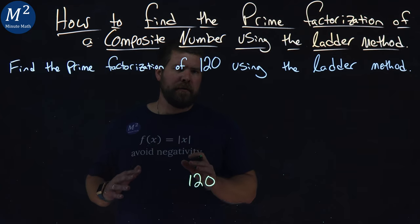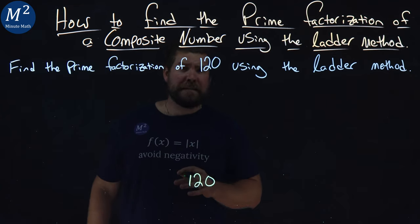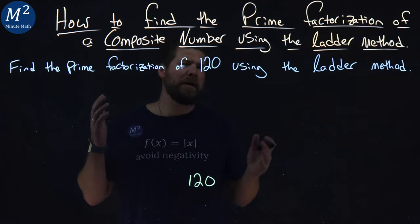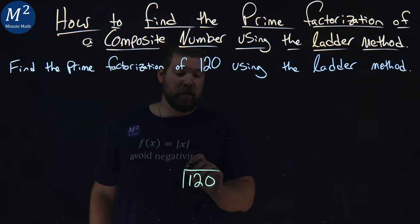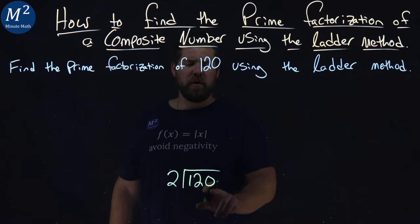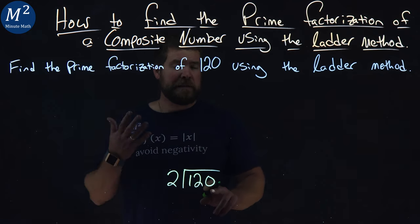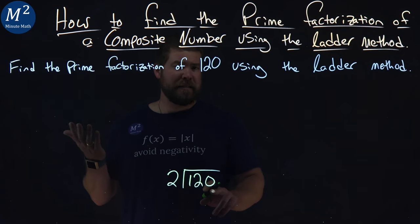I want to pick a prime number, the lowest prime number that can go into 120. Well, 120 is even, so we're always going to start with 2 there. So using long division, 2 goes into 120, we know 60 times. 120 divided by 2 is 60.